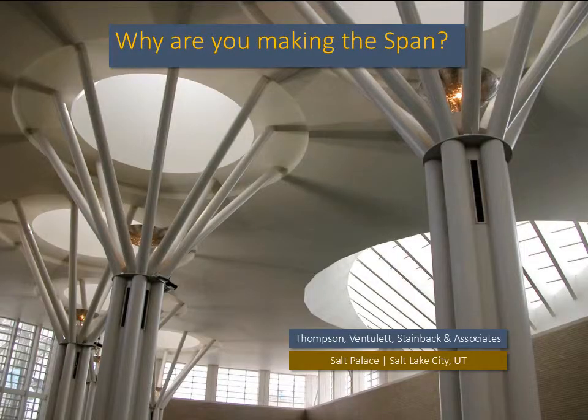As we approach our design problem and think about the impact of spanning on the creation of space, we have to initially ask ourselves: why are we making this span? Why do we not want columns? There is always a structural trade-off between the frequency of column spacing and the size or depth of the spanning members. The longer the span, the deeper the member. If compact floor-to-floor heights are the objective, then shorter spans will decrease the overall height.